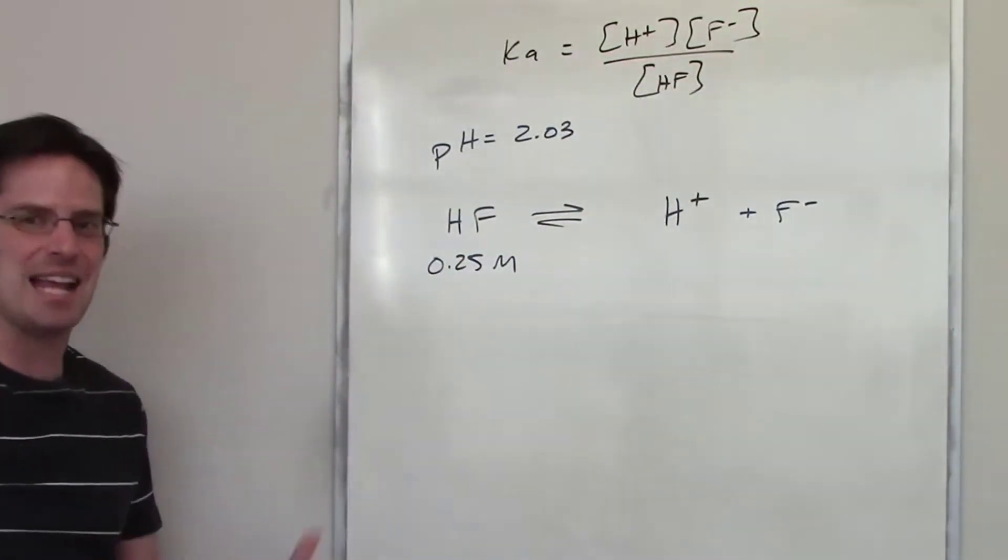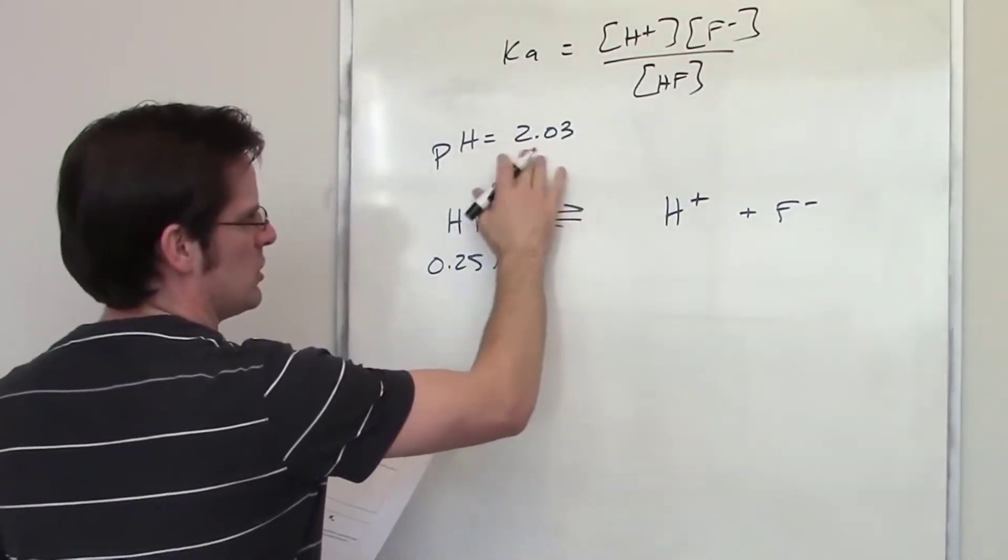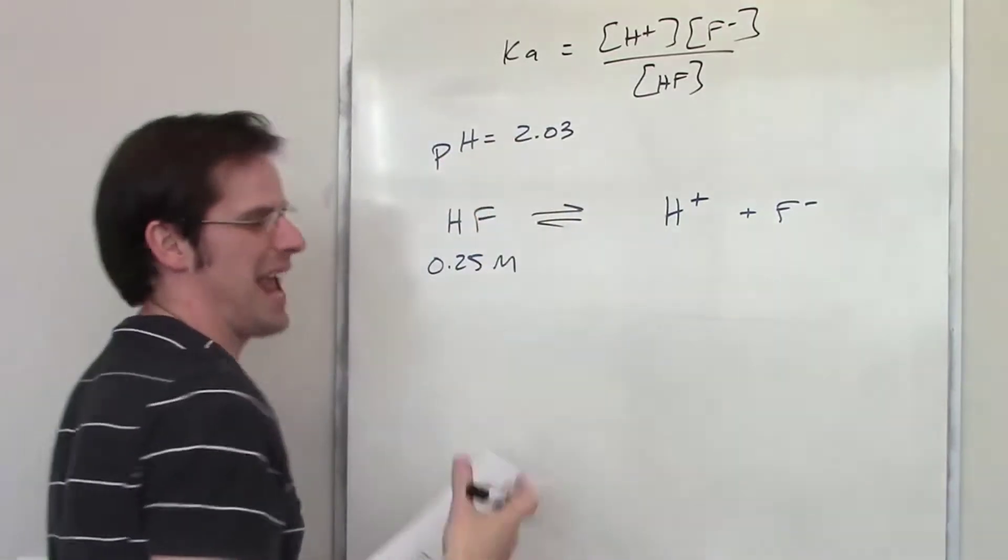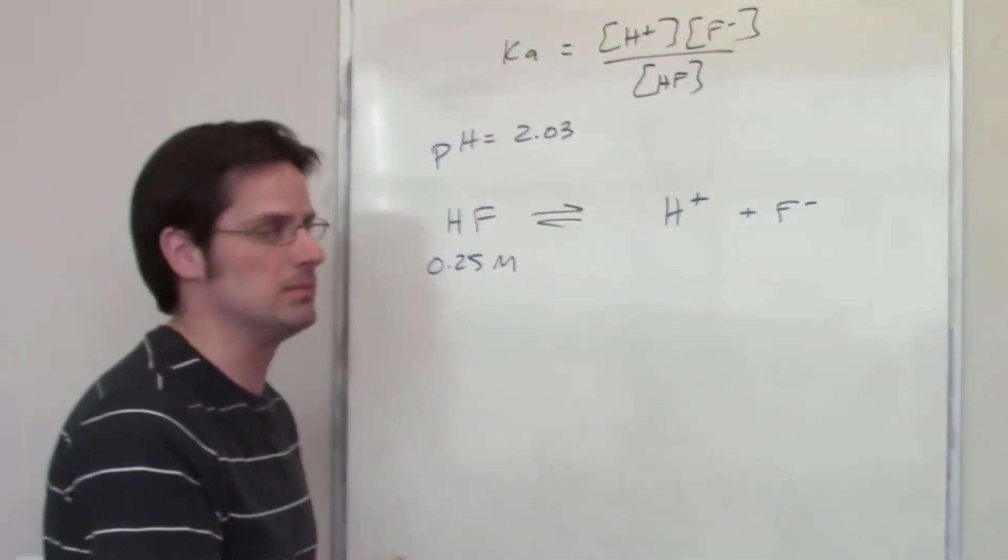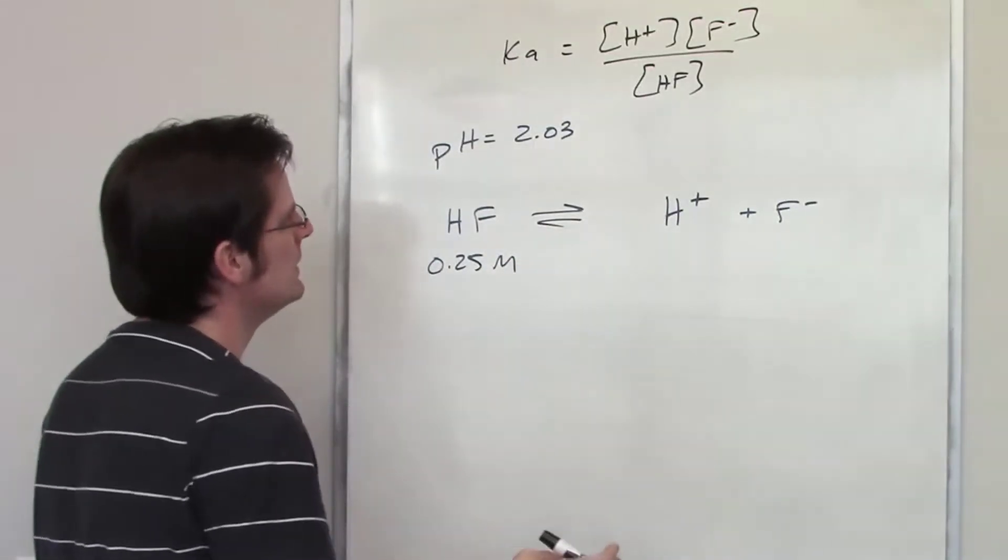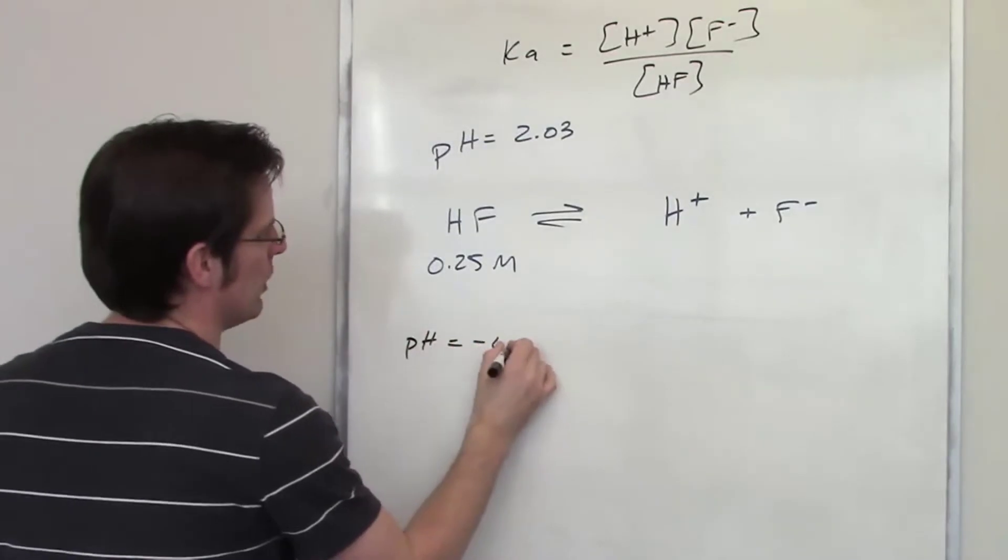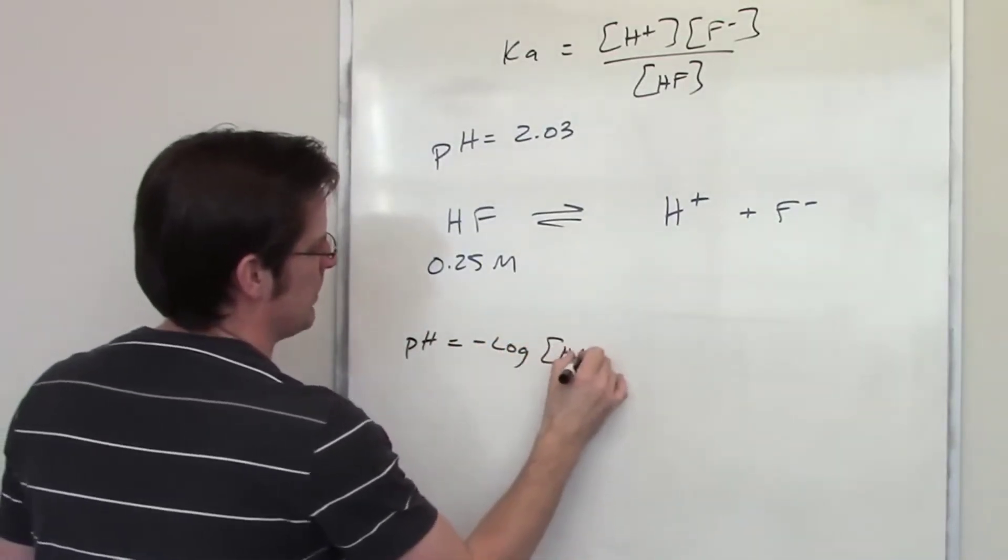So, the pH is going to be 2.03 at equilibrium according to this problem. Can I use that to determine anything? Well, yeah, you might remember that pH is equal to the negative log of the concentration of H plus.